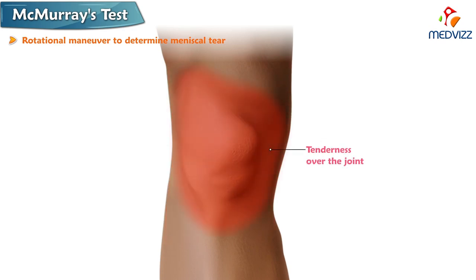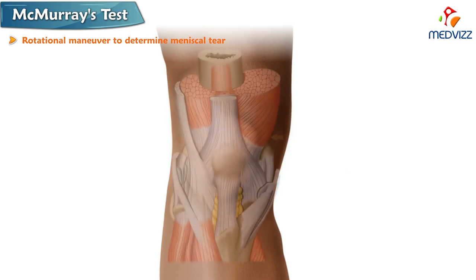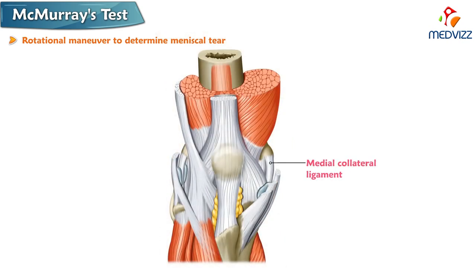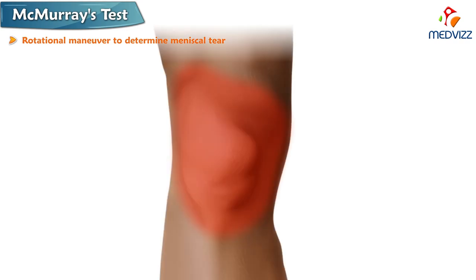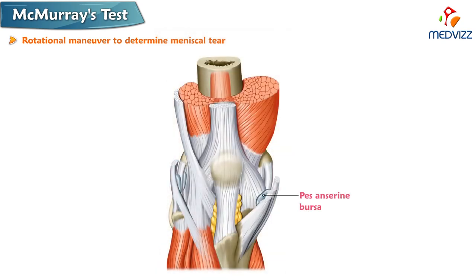Joint line tenderness is the most sensitive finding especially in this case. Pain at a higher level to the joint line is usually associated with the medial collateral ligament, and pain at a lower level to the joint line is usually associated with the pes anserine bursa.